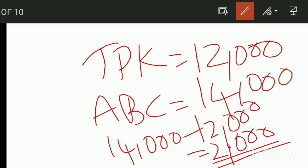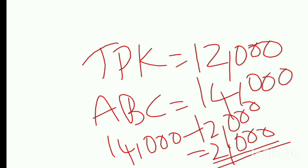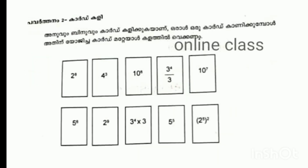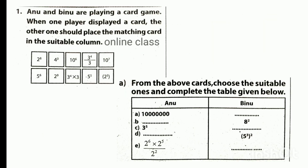Anu and Vinu are playing a card game. When one player displayed a card, the other one should place the matching card in the suitable column. From the above cards, choose the suitable ones and complete the table given below.